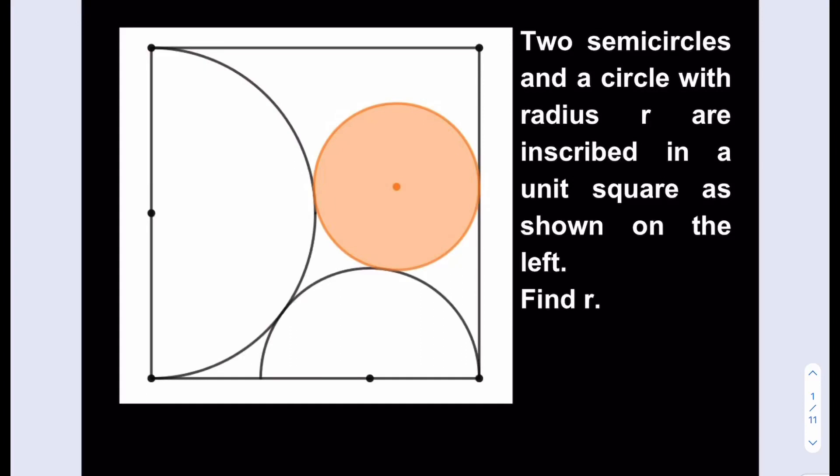Hello everyone. In this video we're going to be solving a geometry puzzle, a Sangaku problem. Two semicircles and a circle with radius r are inscribed in a unit square as shown on the left. Find r, which is the radius of the shaded circle.